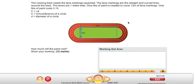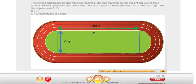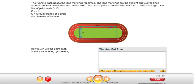We need to know how long the lines are around the track — how long these lines are in metres. When we've got the length of those lines around the track in metres, we can then start to convert to litres, and then we can multiply the litres by the cost.